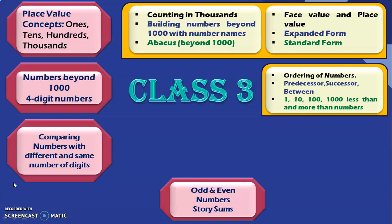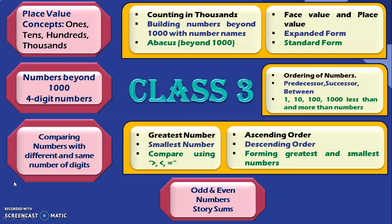Under the topic comparing numbers with different and same number of digits, the following learnings are achieved: identifying the greatest number, identifying the smallest number, comparing numbers using the symbols greater than, less than, and equal to, arranging numbers in ascending and descending order. Something new learnt in class 3 is forming the greatest and smallest numbers. We will see details about each of these in separate videos, and links to each of these concepts are provided in the description box below.